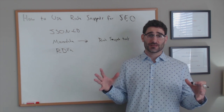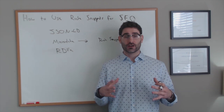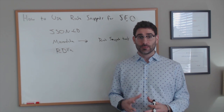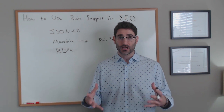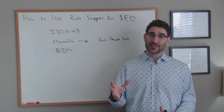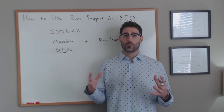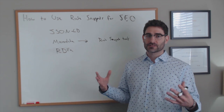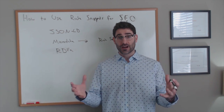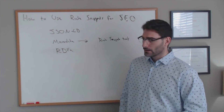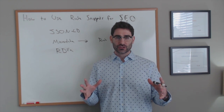Now that we have our rich snippet created for our local business, we're going to put it in the footer so it appears on every single page. It's different per rich snippet type — if you're using snippets for a product or review, it only goes on that single page. But if you're using a local business snippet, you want it on every single page so that no matter what page Google is crawling, they know that website belongs to that business and can rank you geographically better.